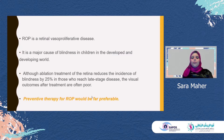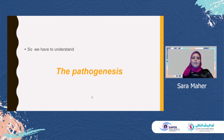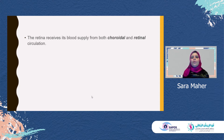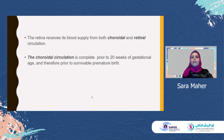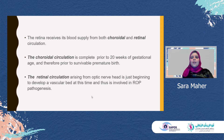We have to understand the pathogenesis. As we all know, the retina receives its blood supply from both the choroidal and the retinal circulation. The choroidal circulation is complete prior to 20 weeks of gestation, and therefore prior to survivable premature birth. However, the retinal circulation arising from the optic nerve head is just beginning to develop at this time, as a vascular bed, and thus is involved in ROP pathogenesis.